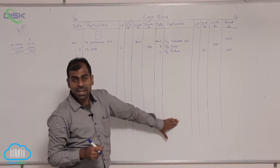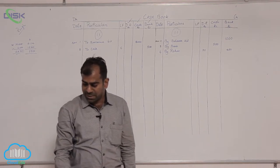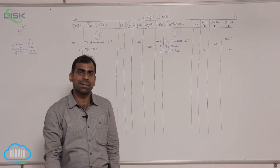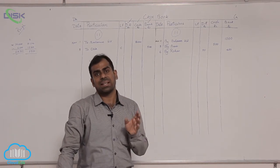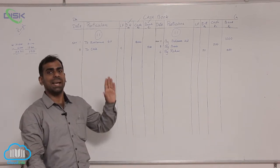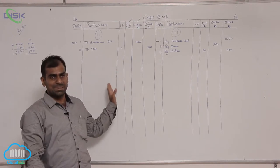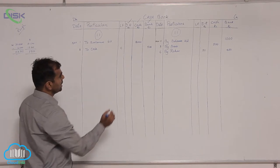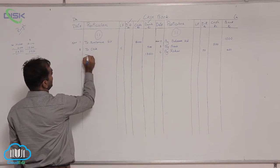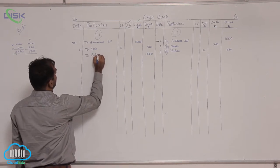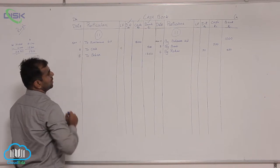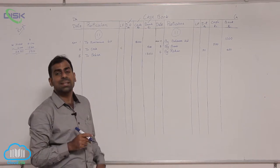On the 8th, a check is received from Sohan and deposited into bank. Since the check is deposited into bank, record the amount of 1,350 directly in the bank column on the debit side. The reason in the particulars column is 'to Sohan', and the date of the transaction — the 8th — is entered in the date column.